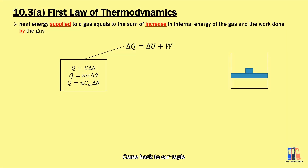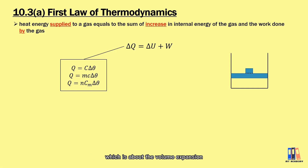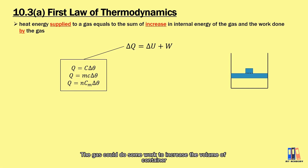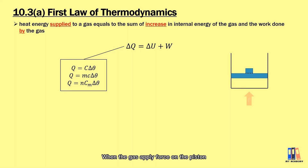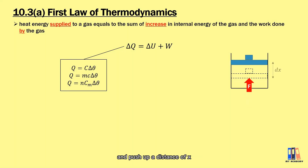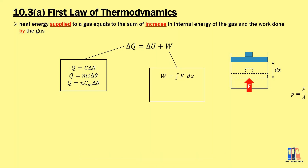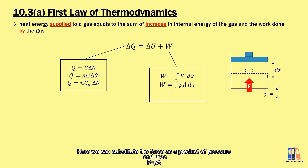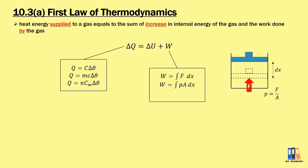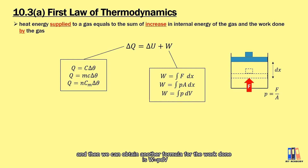The next thing is about the work done by the gas, which is about volume expansion. The gas can do work to increase the volume of the container. When the gas applies force on a piston and pushes out a distance x, we get the work done as the product of force and distance. Here we substitute force as the product of pressure and area, based on the formula P = F/A, and obtain the formula for work done: W = P dV.